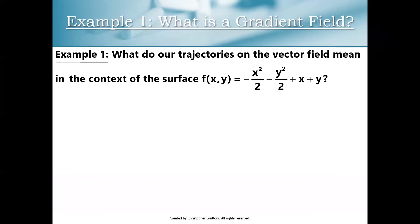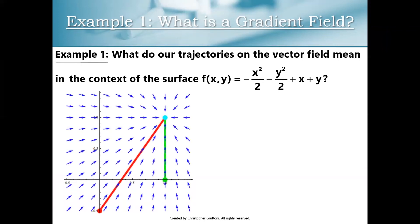Let's think about what trajectories mean on a vector field when our vector field is actually a gradient field. We have the rubber ducky following the field vectors and ending up at this sink. We already guessed that the sink is associated to the maximum on the surface. Remember that gradient vectors go in the direction of greatest initial increase on a surface. So what our rubber ducky would have been doing on the surface is constantly following the direction of greatest initial increase until it started to approach the maximum.